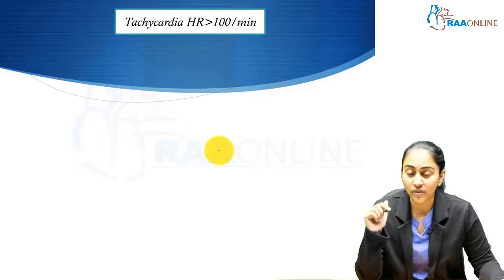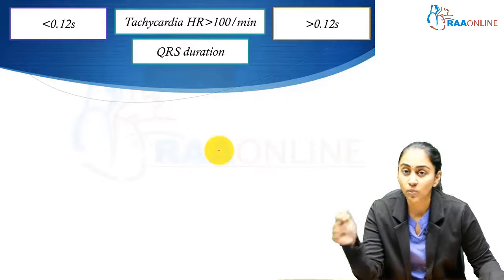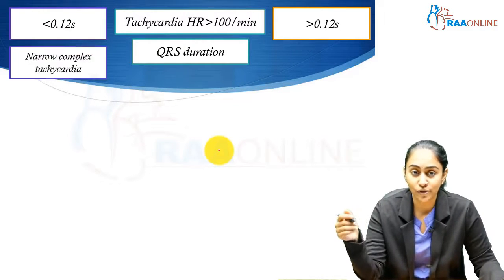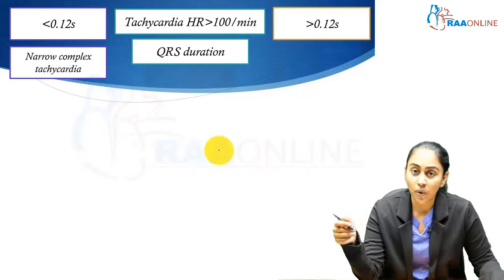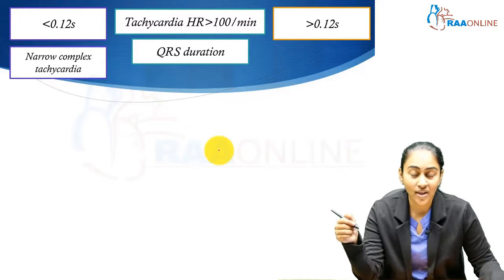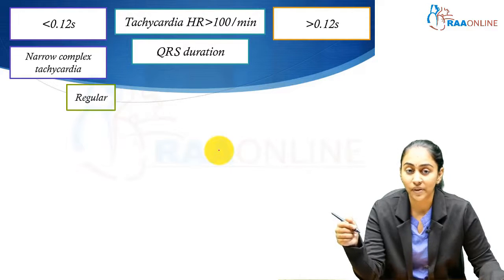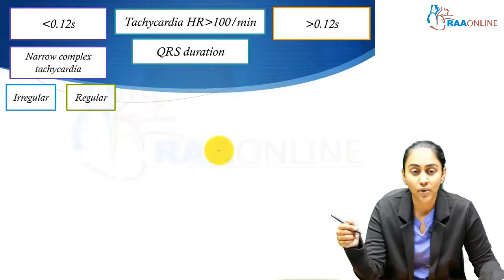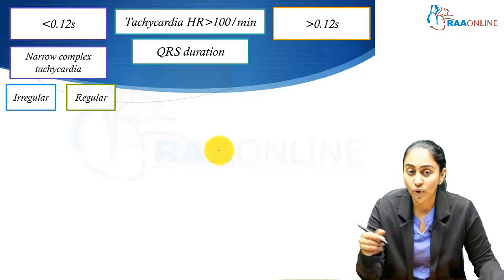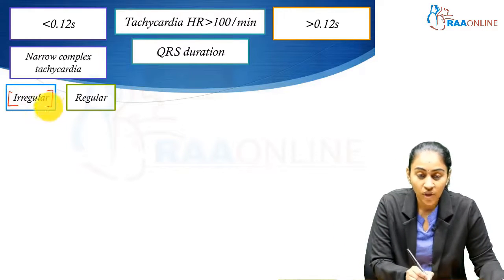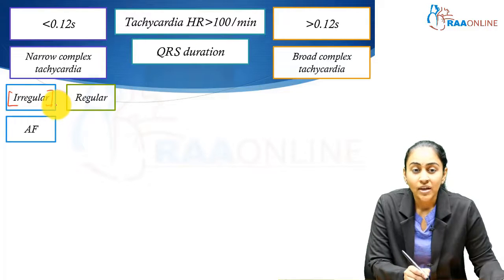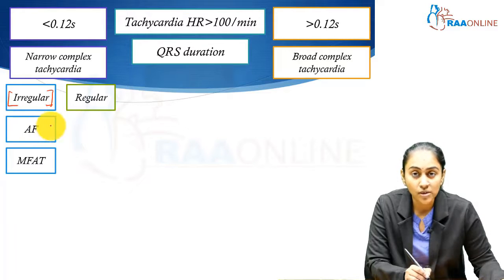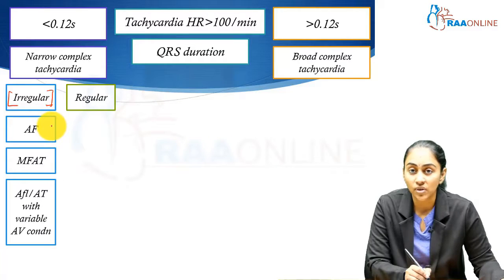To recap our approach to tachycardia and understand where atrial fibrillation fits in this algorithm: tachycardia can be divided into narrow complex and broad complex depending on QRS duration. For narrow complex tachycardia, the next important question is regularity — regular or irregular. Atrial fibrillation falls into the bracket of irregular narrow complex tachycardia, most often followed by multifocal atrial tachycardia.